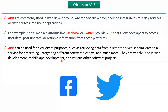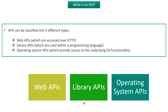APIs are widely used in web development, mobile app development, and various other software projects. APIs can be classified into three different types: Web APIs, Library APIs, and Operating System APIs. Web APIs are accessed over HTTP. Library APIs are used within a programming language. And Operating System APIs provide access to the underlying OS functionality.